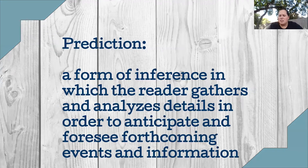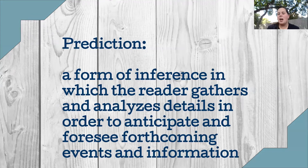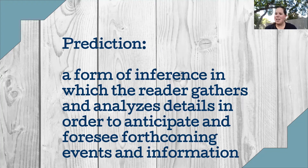Making predictions is a type of inference where you gather and analyze details to anticipate and foresee what is coming, and that can be used in a story. When you read a story, you might look at the author, look at the cover image, and that's going to help you predict what the story is going to be about. Or you could read the first chapter and predict what's going to happen. You predict all through the story, so it's important that we know what that is and understand the importance of predictions.